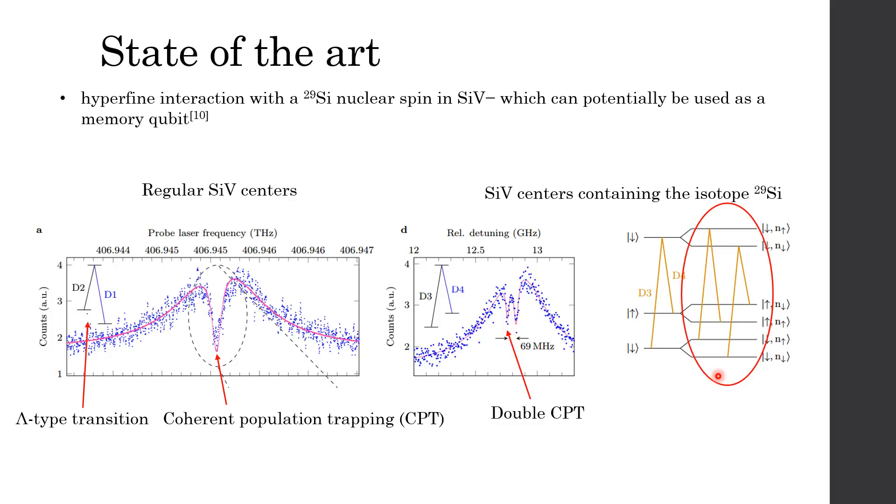This figure shows the excitation spectrum for SiV centers containing the silicon-29 isotope. This doublet arises due to the hyperfine interaction with silicon-29 nuclear spin. The two possible lambda-type transitions are shown here. This observation of silicon-29 hyperfine splitting in SiV centers raises the possibility of direct access to nuclear spin, which should have much longer coherence time than electron spin. This is the first evidence of hyperfine interaction with silicon-29 nuclear spin in SiV centers. So it means that SiV centers can potentially be used as a memory qubit.